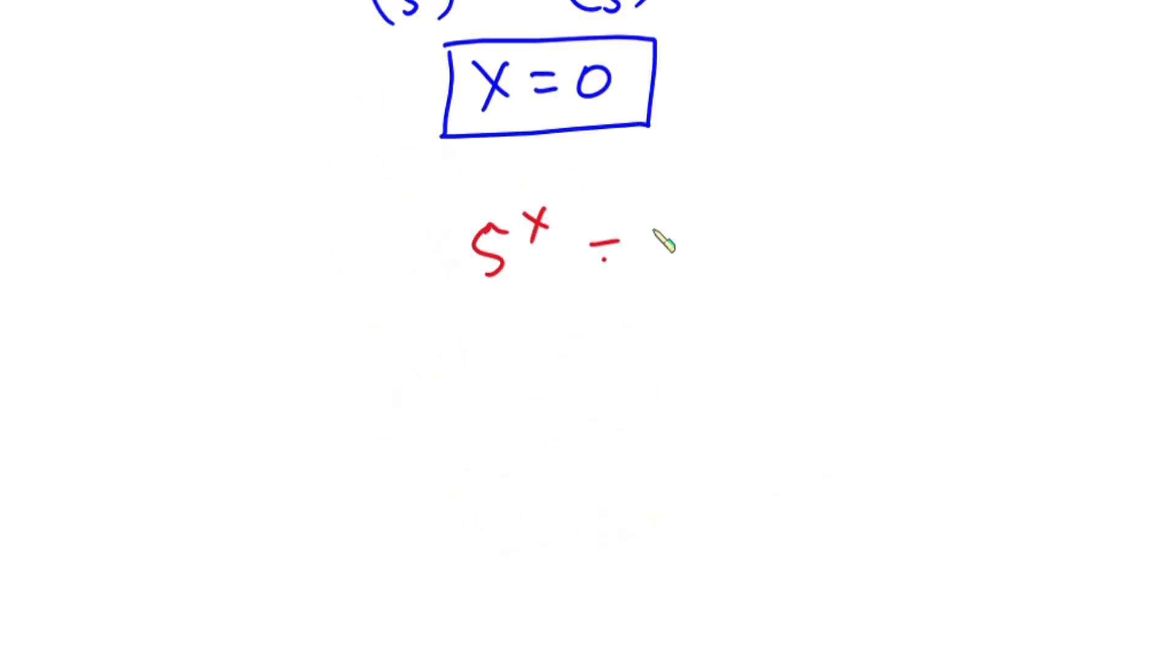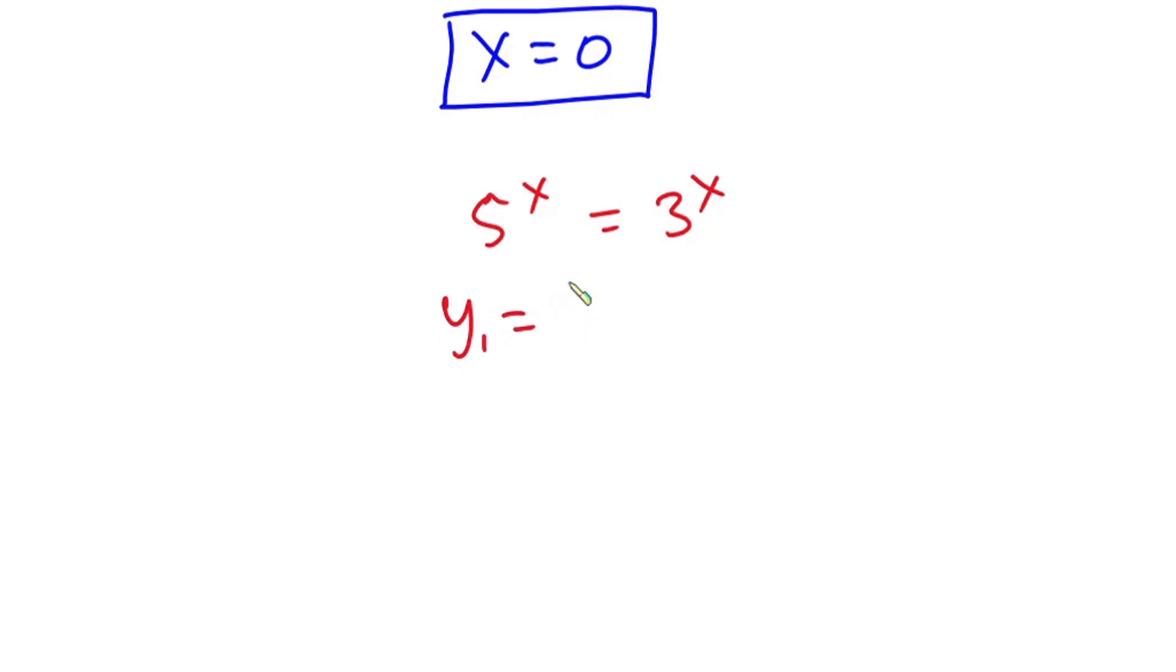We have 5^x equals 3^x. Now I'm going to let y₁ = 5^x and then y₂ = 3^x. Now if we plot these two equations on the same graph, we have this.